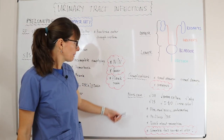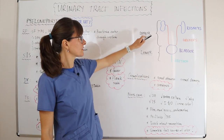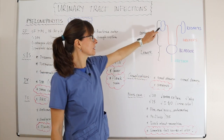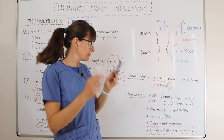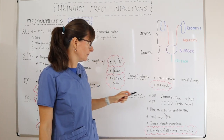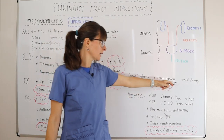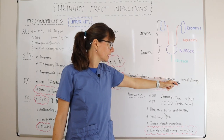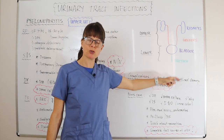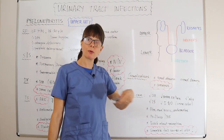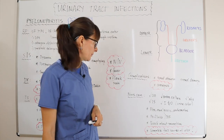Complications include a renal abscess, meaning the bacteria gets lodged in the kidney causing abscess formation. It can lead to urosepsis, and it can lead to renal damage and/or renal scarring, especially if there are repeated episodes of pyelonephritis.